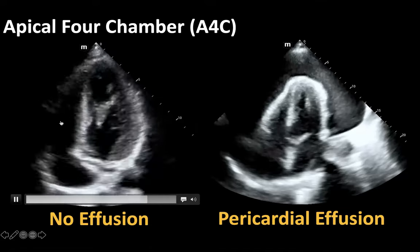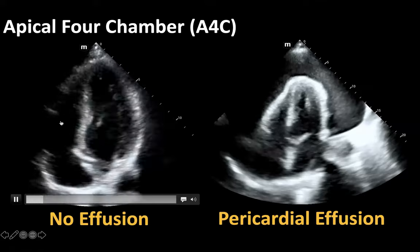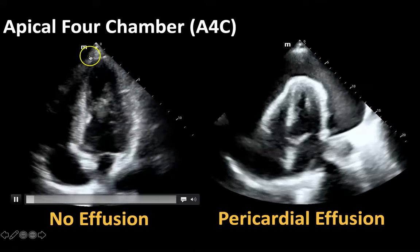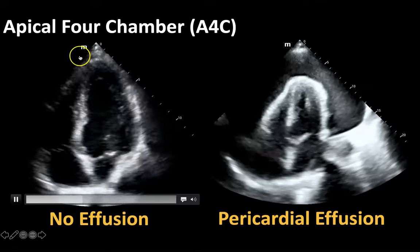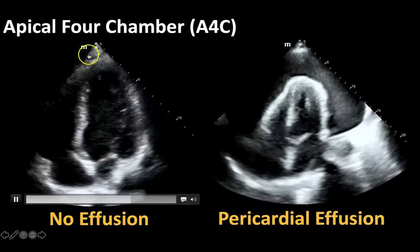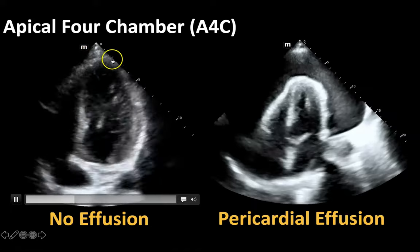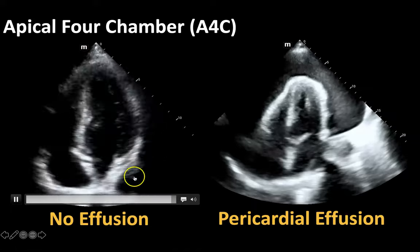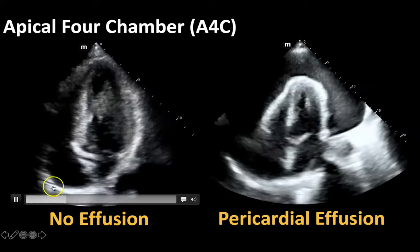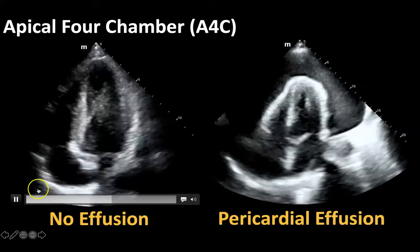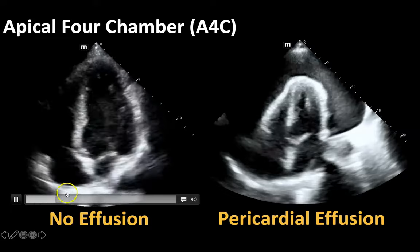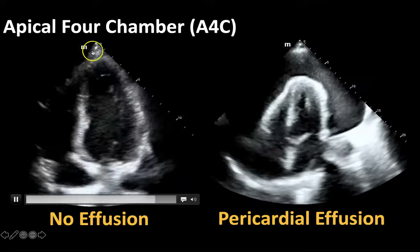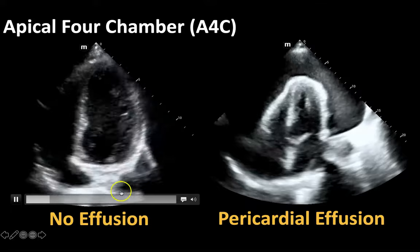When we look for effusion we're really just looking at the outside of the heart. We're looking anteriorly — do we see a black stripe or fluid anteriorly? Then we look all the way around the heart for any sort of black stripes, seeing if there's any circumferential pericardial effusion, which I do not see in this heart on the left side of the screen.